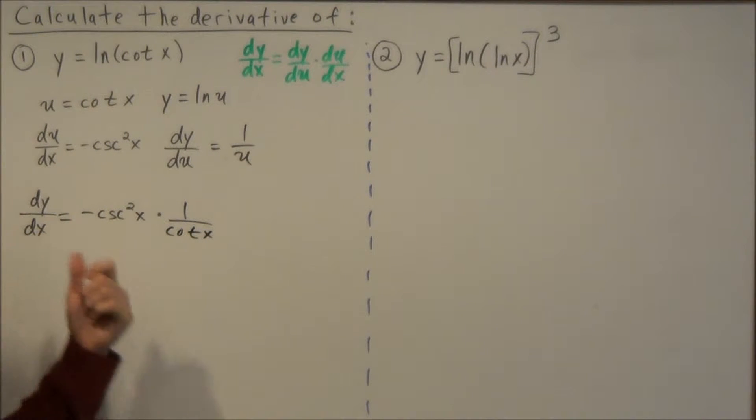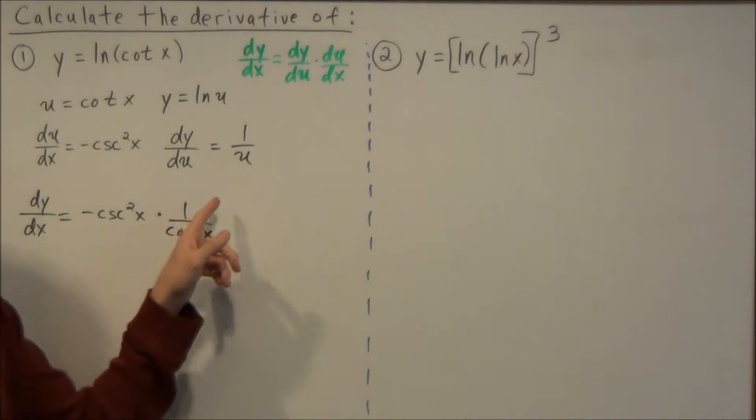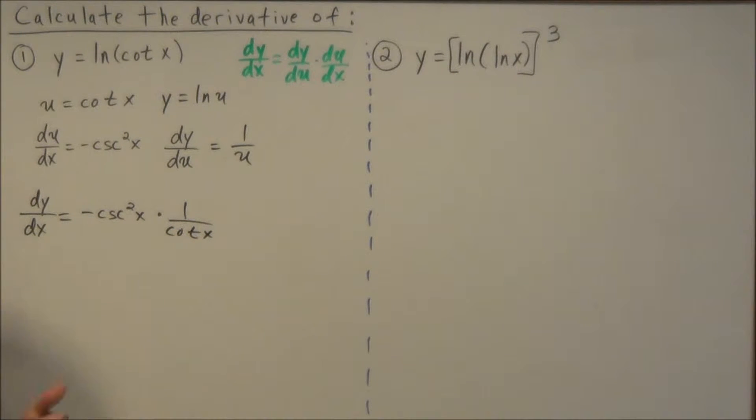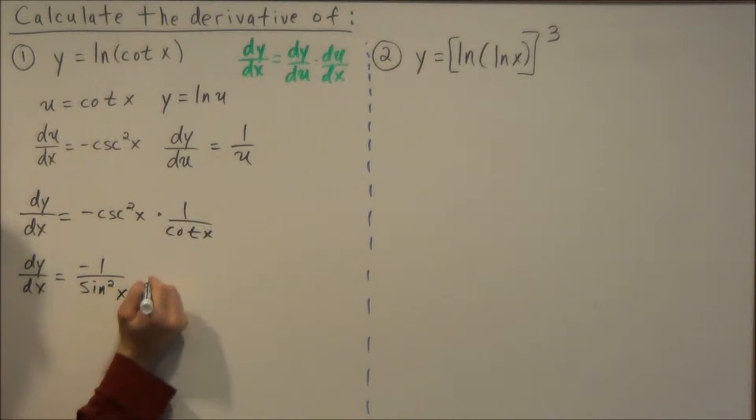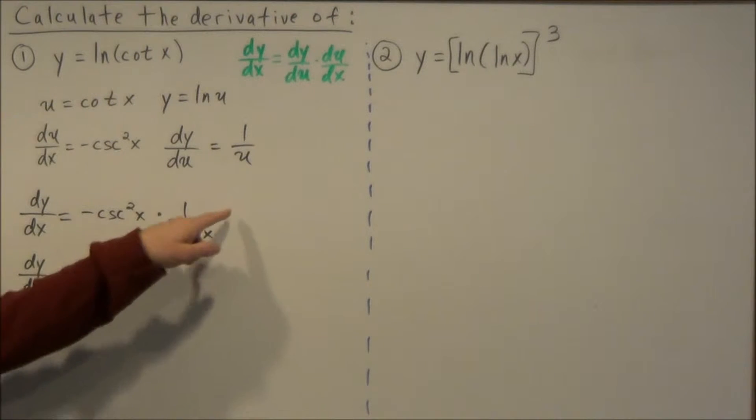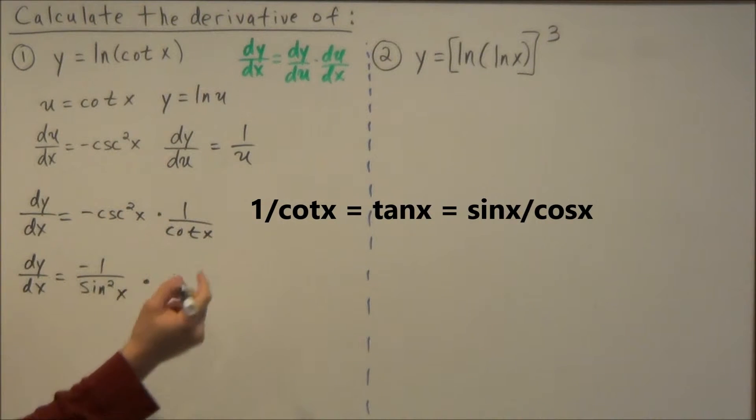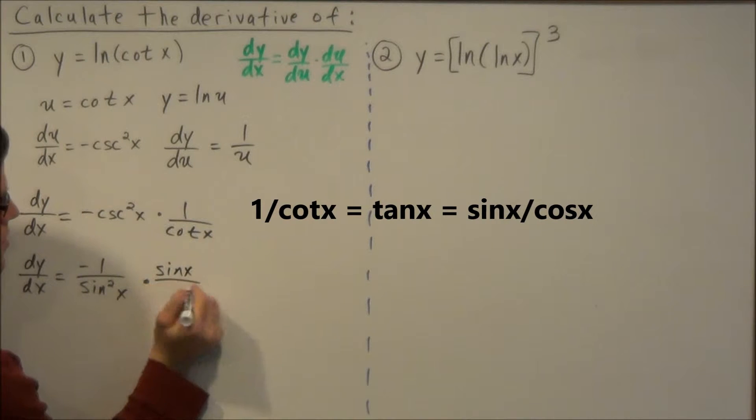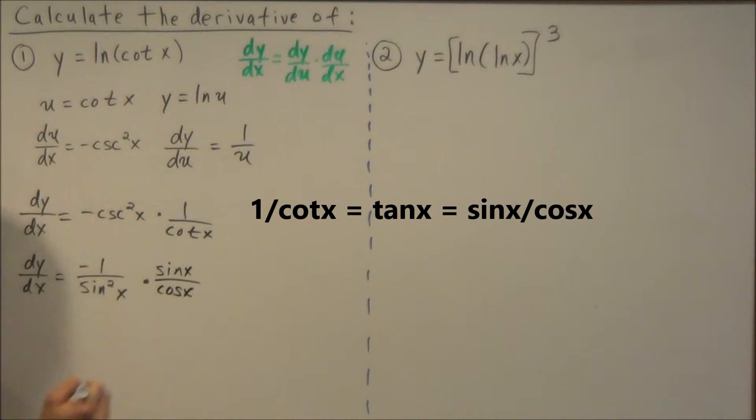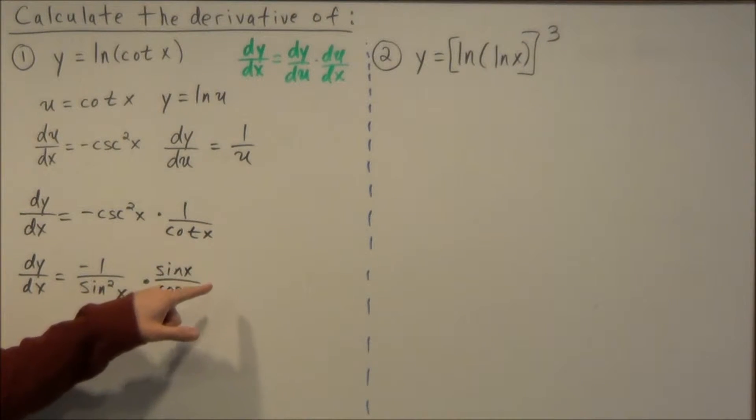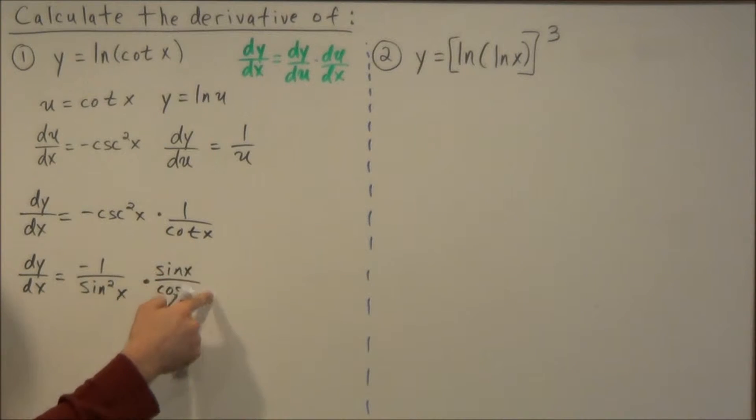Now if we wrote our final answer as negative cosecant squared x times one over cotangent, we could simplify this a little bit more so you might lose a point if you left it like this. So dy dx equals, we could call this negative one over sine squared x times, and one over cotangent is equal to tangent of x. So then we could write one over cotangent as sine x over cosine x, because the reciprocal of cotangent is tangent and tangent is defined to be sine x over cosine x.